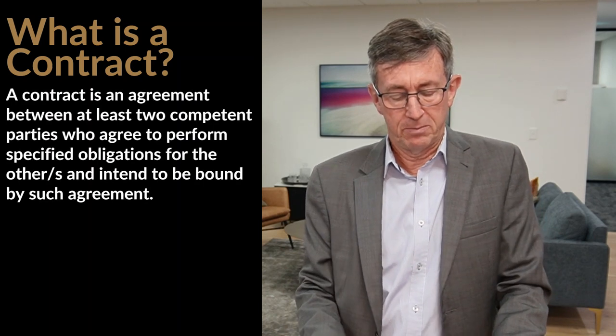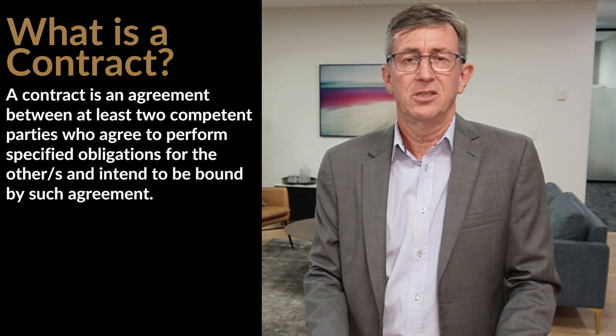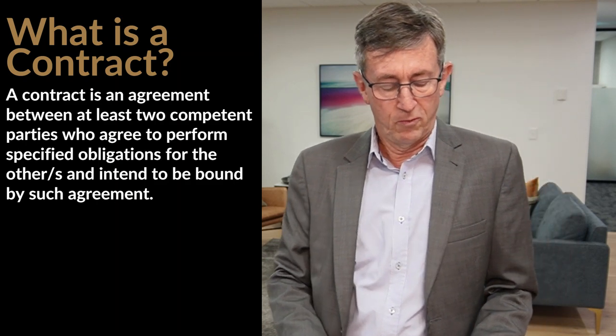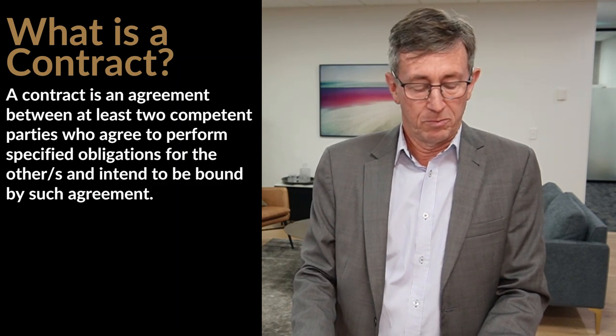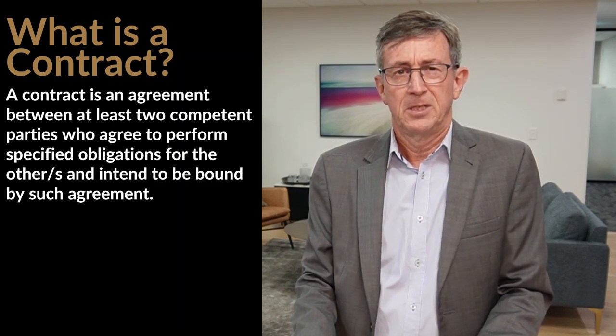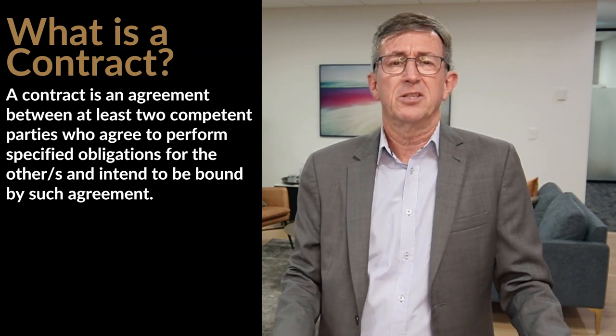So what is a contract? A contract is an agreement between at least two competent parties who agree to perform specified obligations for the other or others, and intend to be bound by such agreement. Let's use an example: two children are in the school playground having lunch. One has a large drink and the other has two donuts. The one with the drink offers to share his drink in exchange for a donut, and the other agrees.